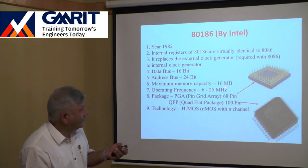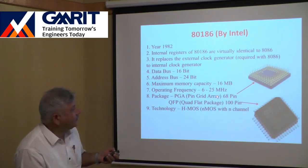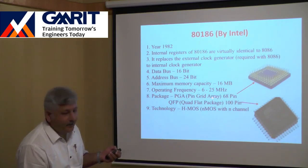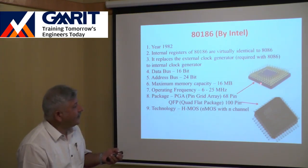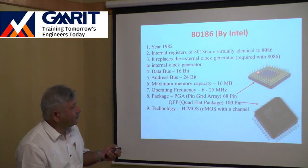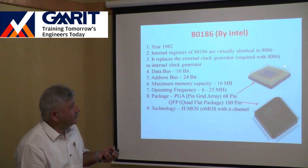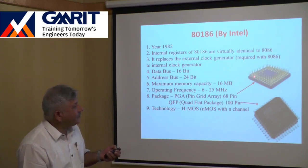The 80186 was launched in different packages. One was a Pin Grid Array (PGA) package with 68 pins, where pins are arranged in layers around the bottom of the IC rather than in two rows. This arrangement is called Pin Grid Array, and it is more efficient than DIP when the number of pins is large.